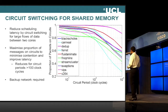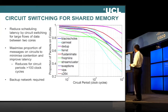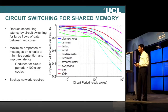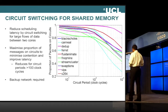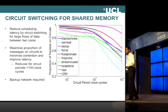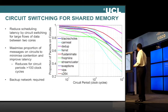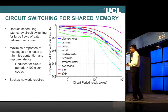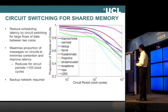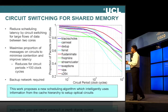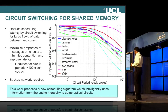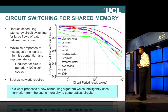This graph shows the proportion of packets on the optical circuit versus the circuit period. After one path request has been received, the circuit would be left open for a certain amount of time, shown here by the circuit period. For circuit periods greater than 100 clock cycles, we have a significant decrease in the proportion of packets on the circuit, which then requires a backup network to send this information. We don't want the circuit period to be too small so that only one message can pass through, but we don't want it to be too long so as to impede other traffic that would actually need to pass. Our work proposes a new scheduling algorithm which intelligently uses information from the cache hierarchy to set up these optical circuits.